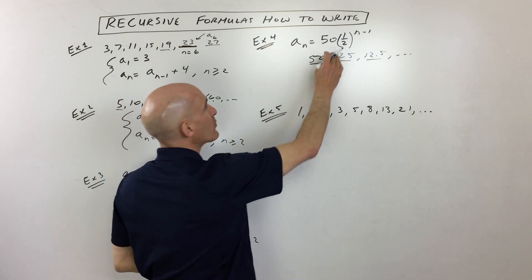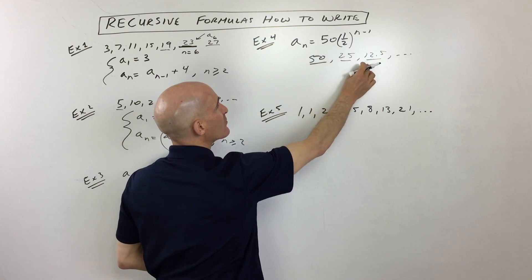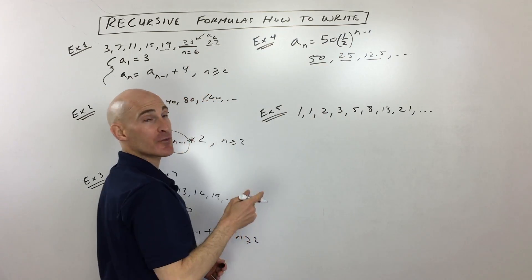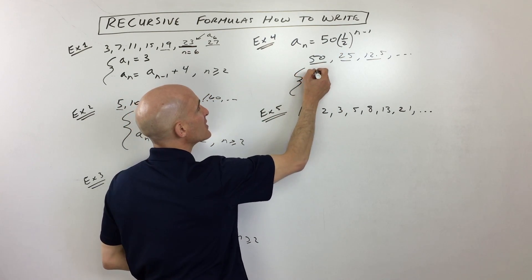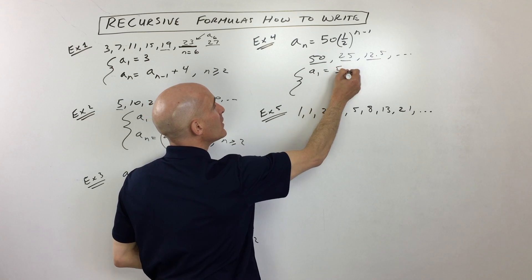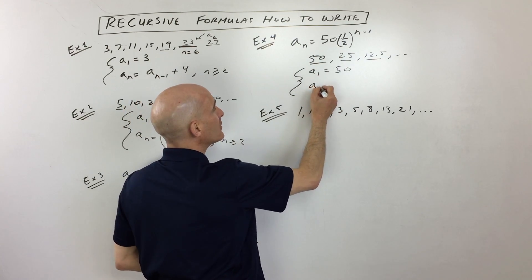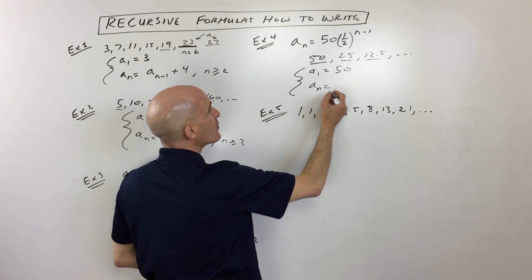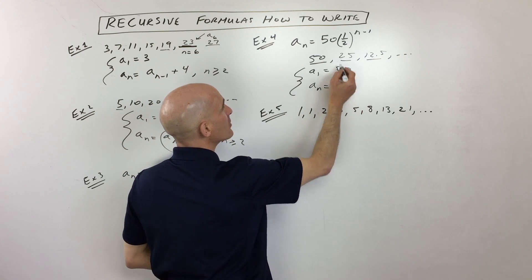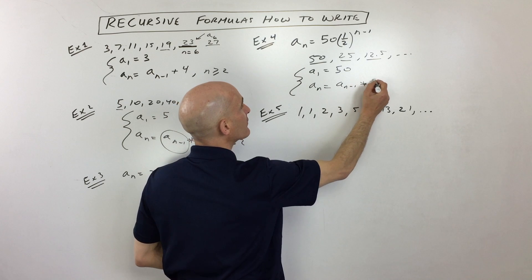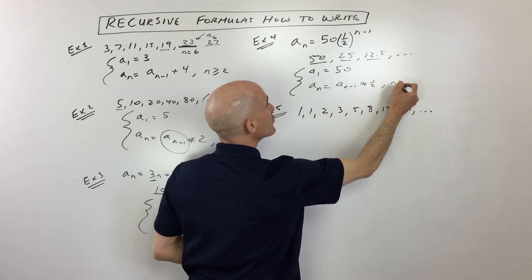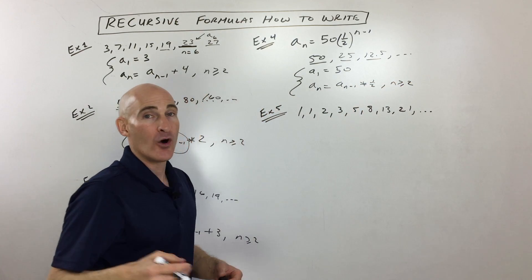It looks like we're multiplying by a half each time. Now if you're already familiar with the explicit formula, you can see this is your ratio. So this is your first term, a sub 1. But just to show you, in case you get stuck, you can always put in a few terms starting with n equals 1 to find the pattern. But now what you can see here is we're taking that previous term and we're multiplying by a half. And that's for when n is greater than or equal to 2.